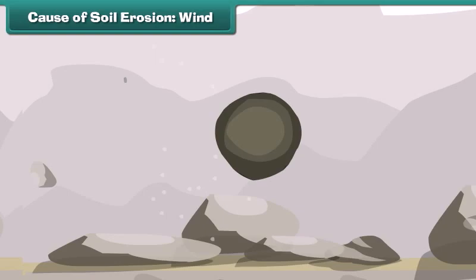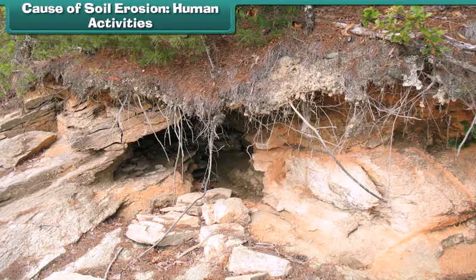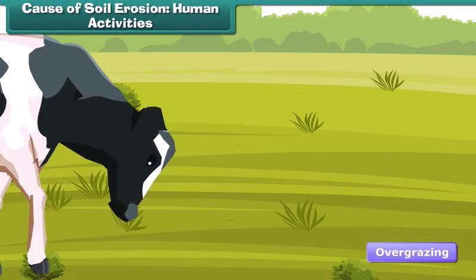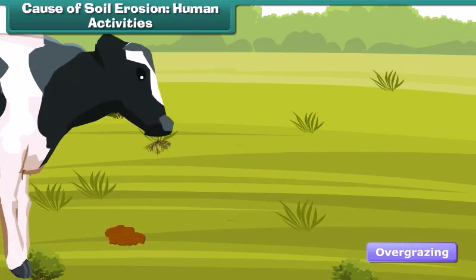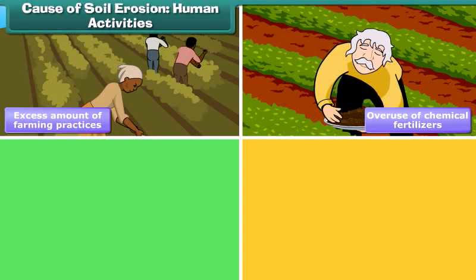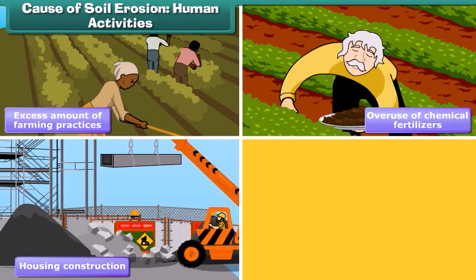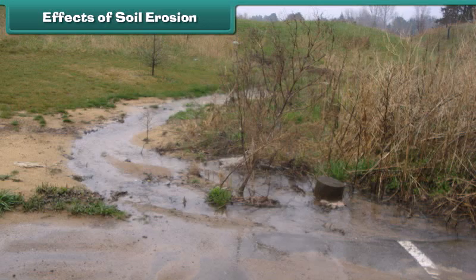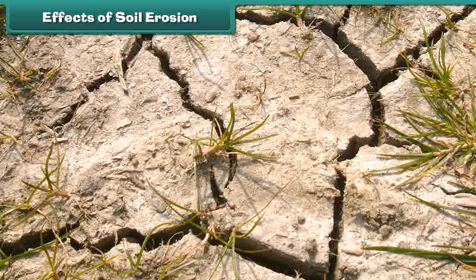Soil erosion is a naturally occurring process, but in many cases it is increased by human activities. Some of these include deforestation, overgrazing by animals, improper or excess farming practices, trail building, overuse of chemical fertilizers, housing construction, mining, and so on.